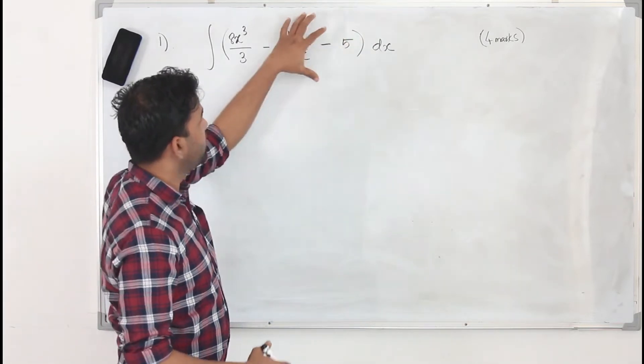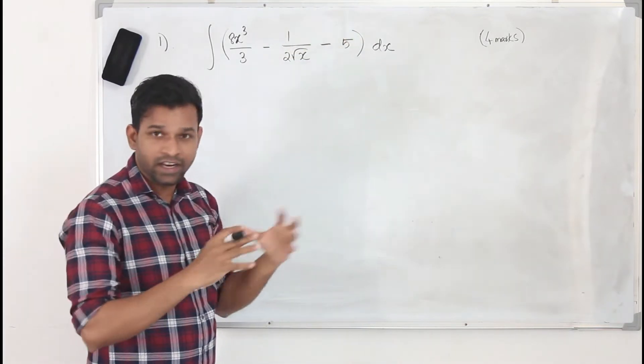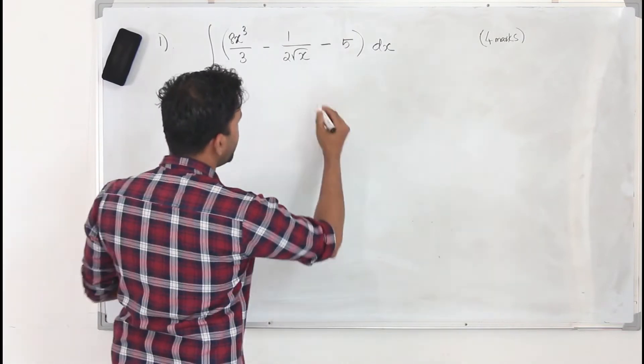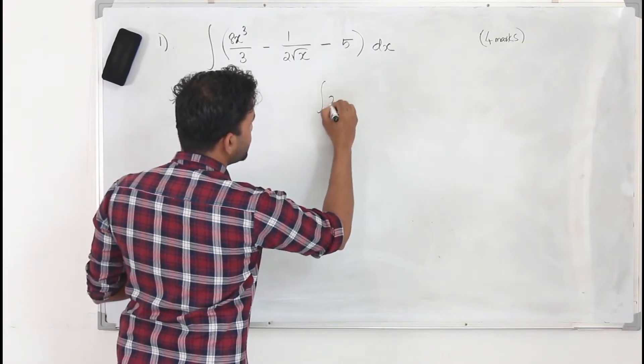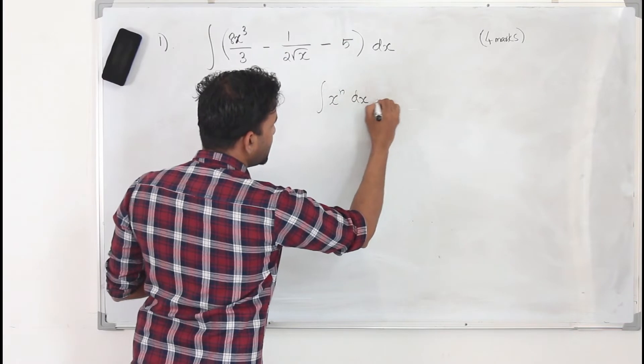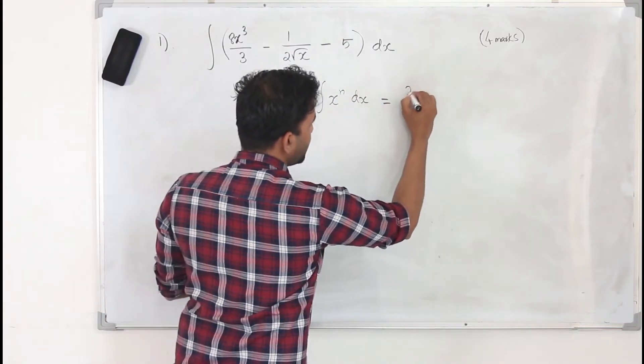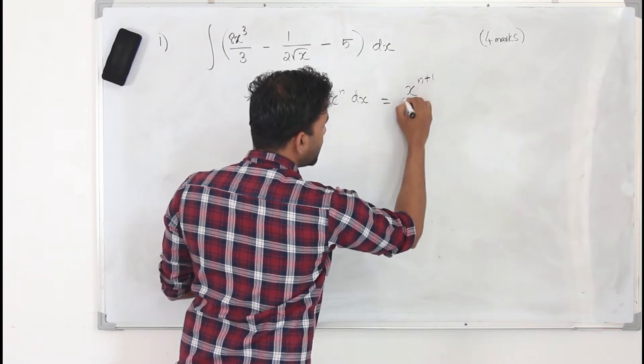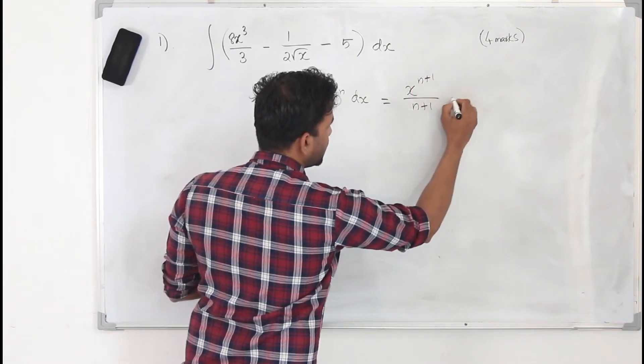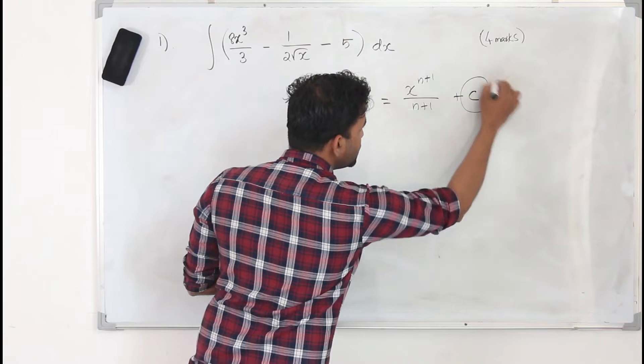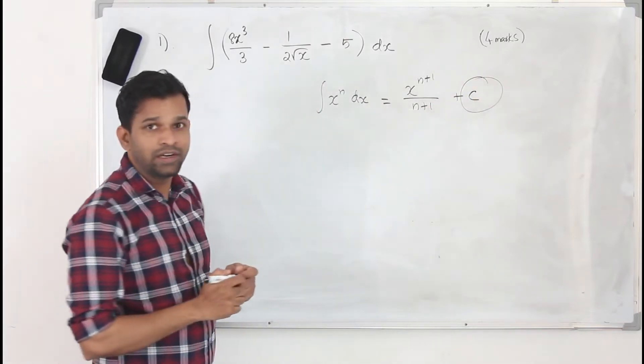It is just a simple integration. All you need to know is the integration formula for algebraic functions. If you have x to the power n dx, when you integrate, this function becomes x to the power n+1 upon n+1 plus c. This is very important. You are not supposed to leave this plus c.